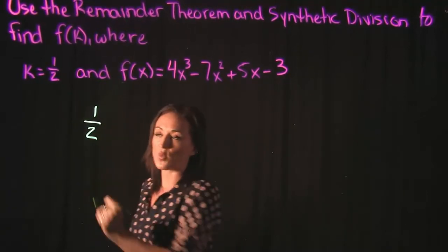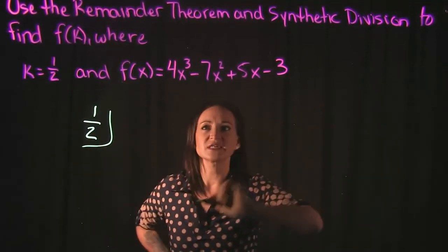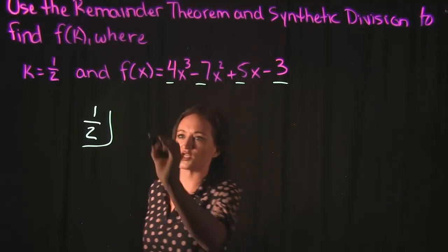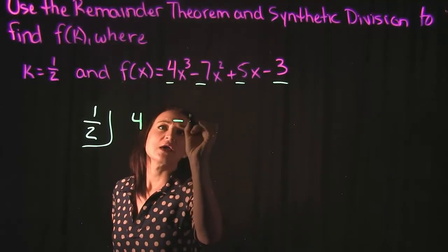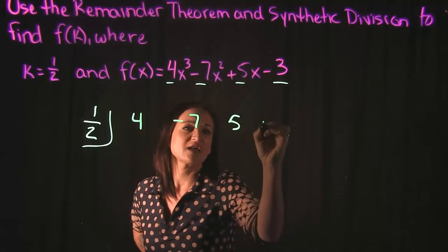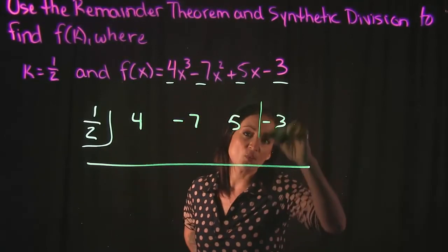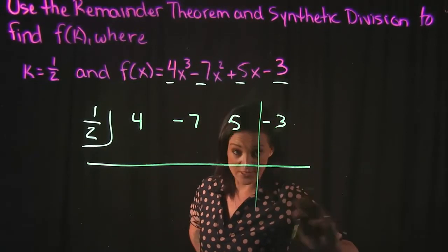So we're going to use the point 1 half is what we're going to test and we're using synthetic division so that means we're taking the coefficients of our function. So we're going to take 4, negative 7, 5, and negative 3 and we're going to do synthetic division with this and what we get down over here